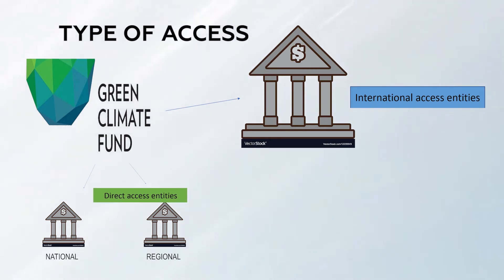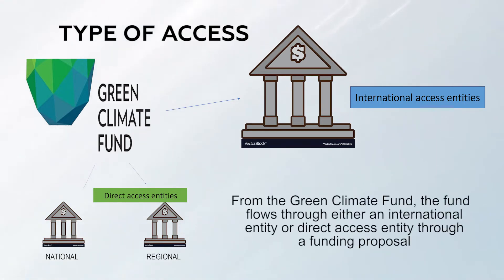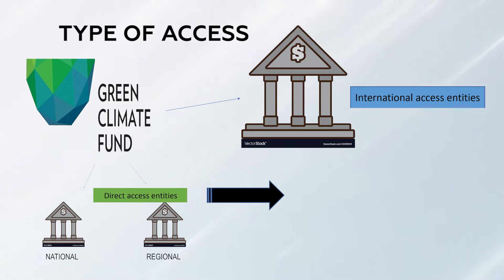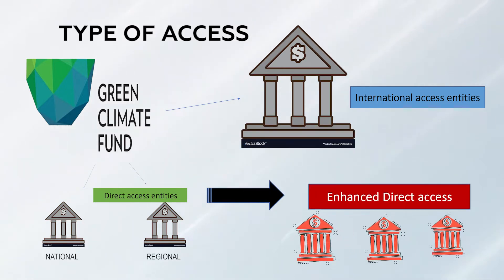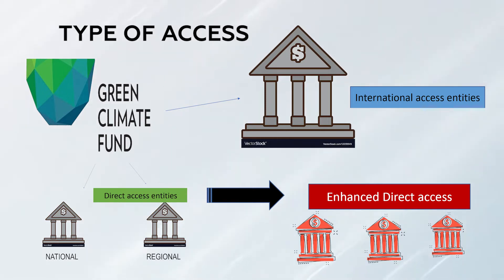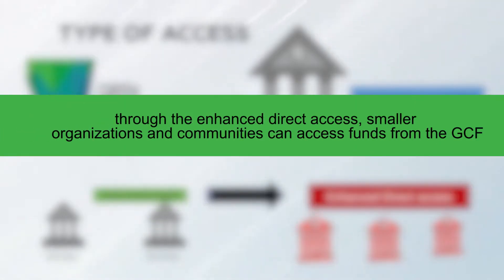We will see how funds are channeled through these different access entities. From the Green Climate Fund, funds flow through either an international access entity or direct access entities via an approved funding proposal. There is also another route called enhanced direct access, which can happen at either the international access track or direct access track. One example is a funding proposal adopted by the board in Antigua and Barbuda, where a national facility was set up by a direct access entity, which then disperses funds to smaller NGOs and local community organizations.